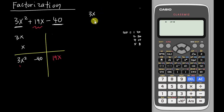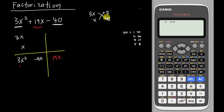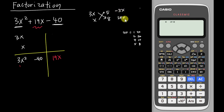If I have 3x and x, and put 5 and 8 like this, I cross multiply: 3x multiplied by 8 gives 24x, and x multiplied by 5 gives 5x. Can I get positive 19x? Yes — if I do 24x minus 5x I get 19x.